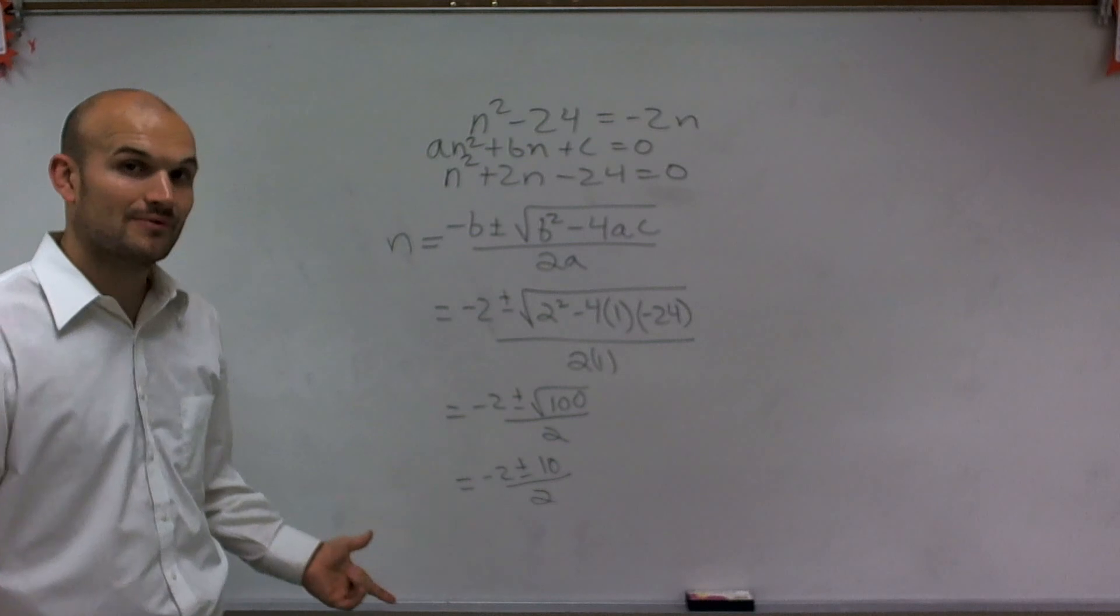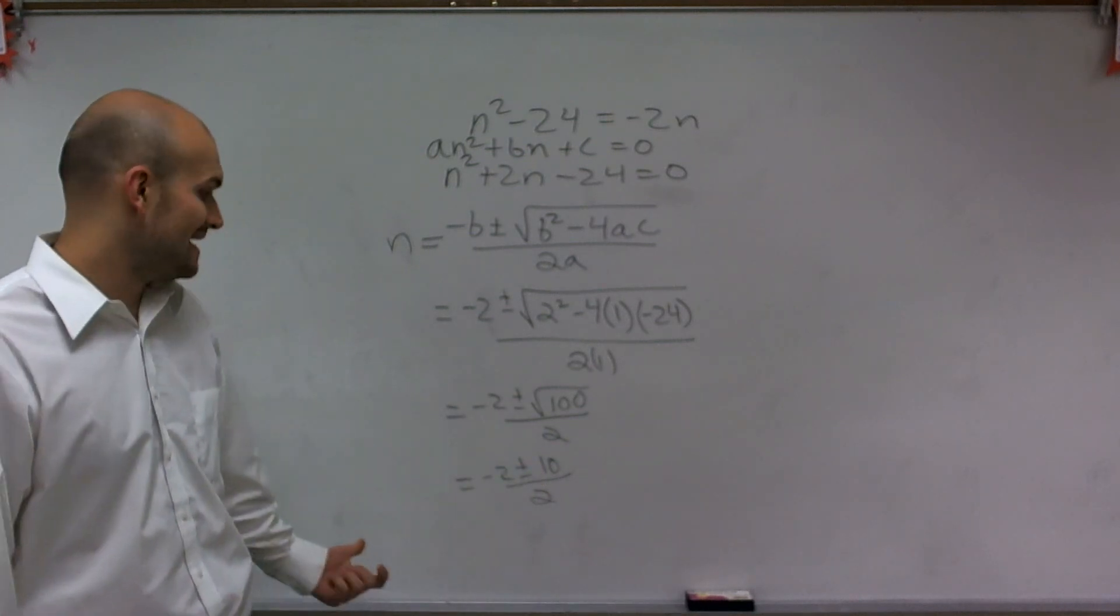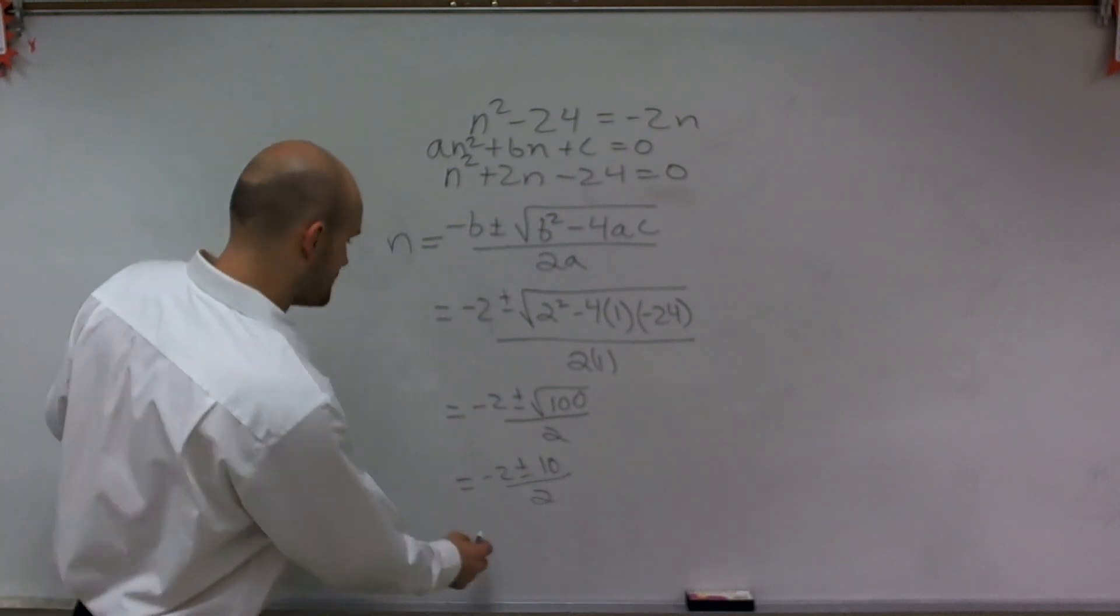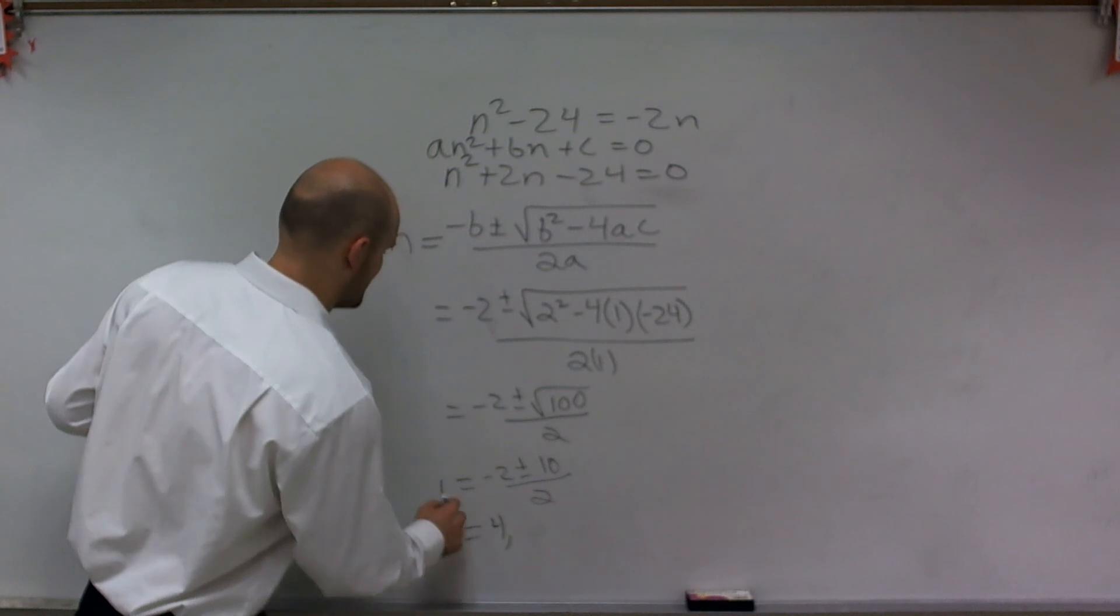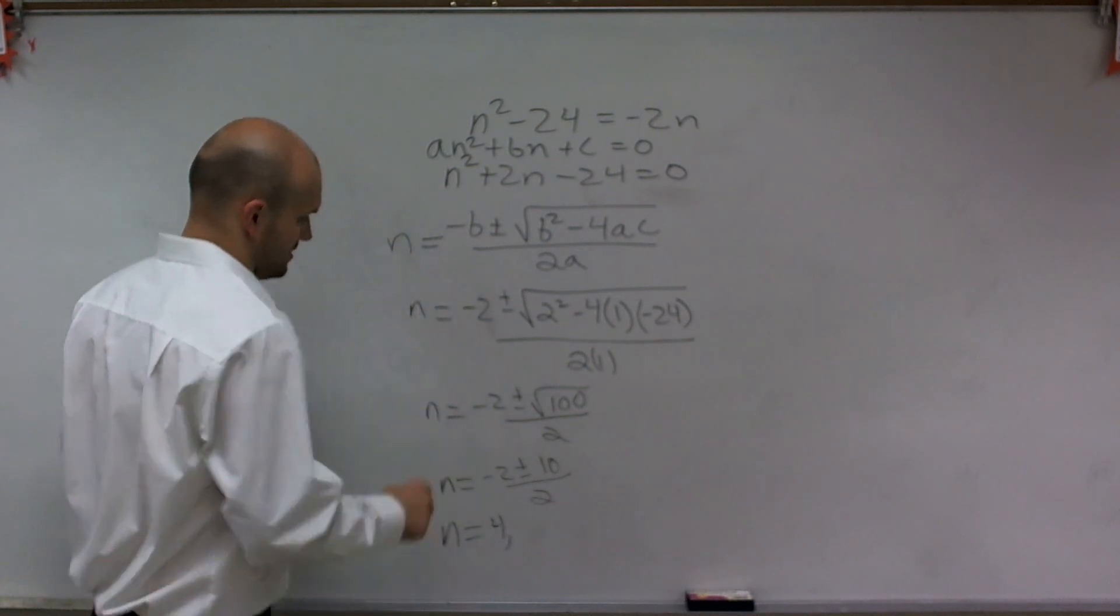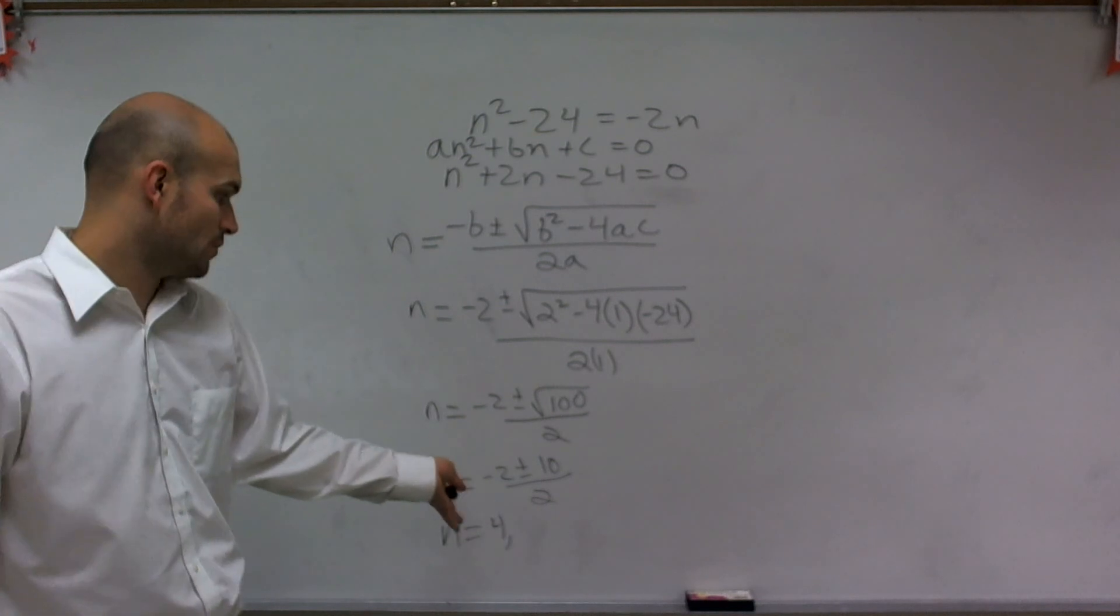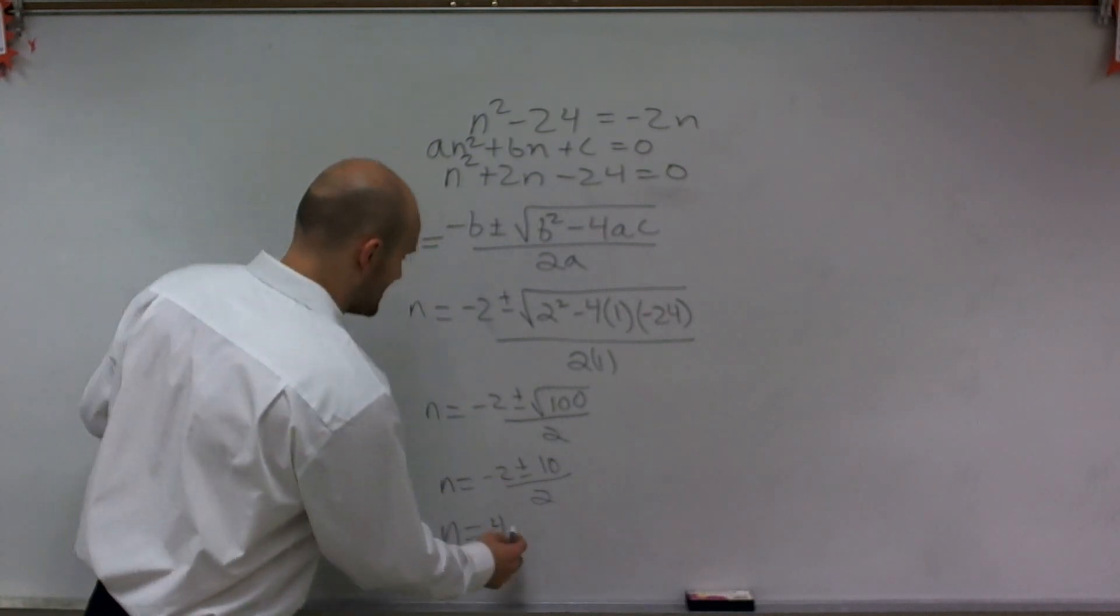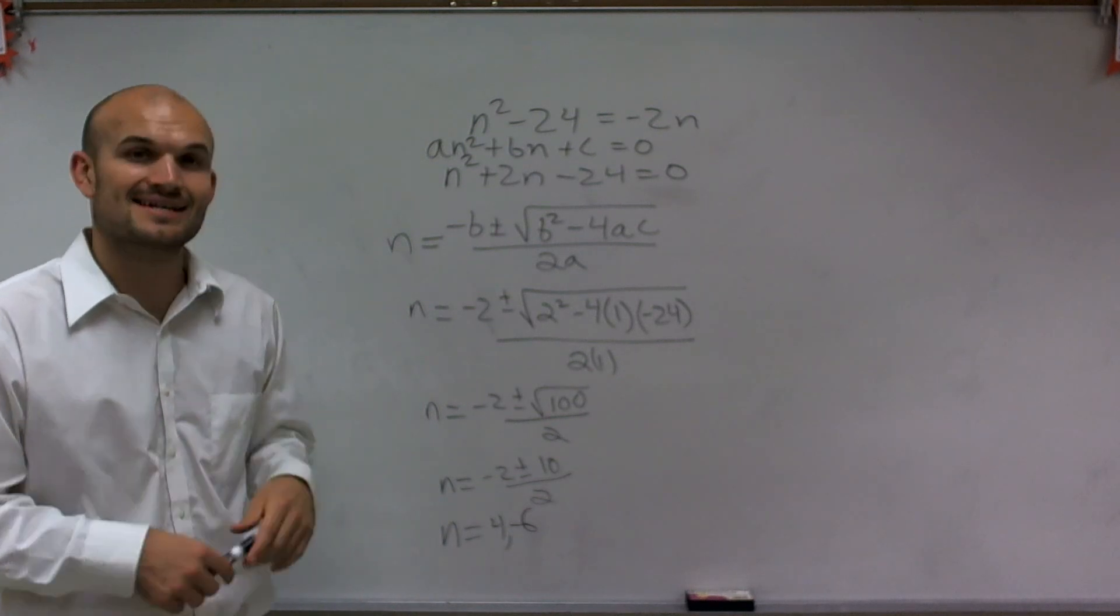To evaluate this, I can do -2 + 10, which gives me 8, divided by 2, which is 4. So n = 4. Or -2 - 10, which is -12. Negative 12 divided by 2 is -6. Therefore, n = 4 or n = -6.